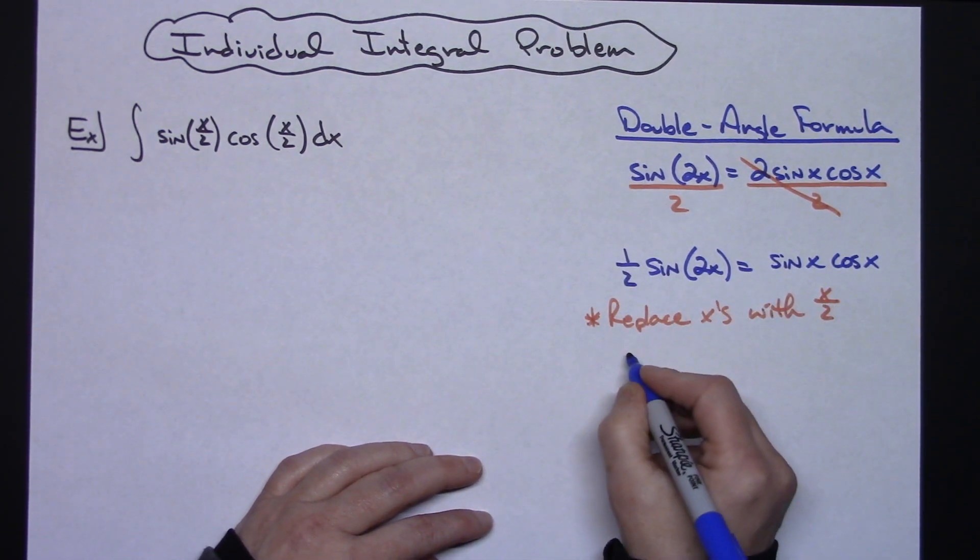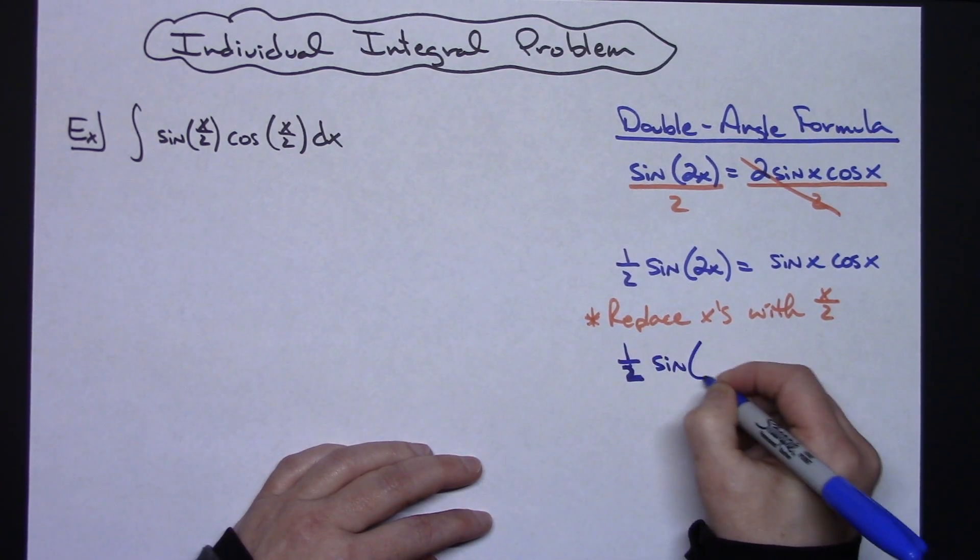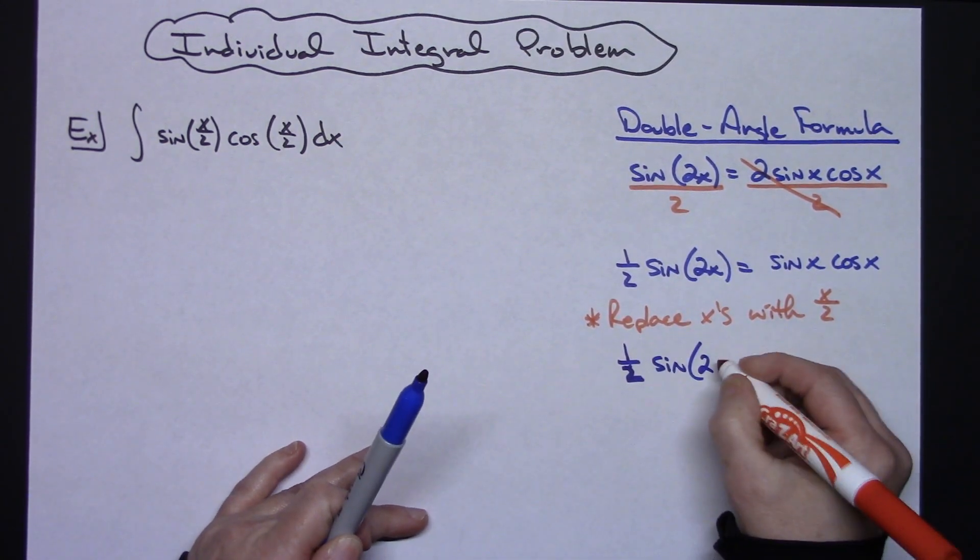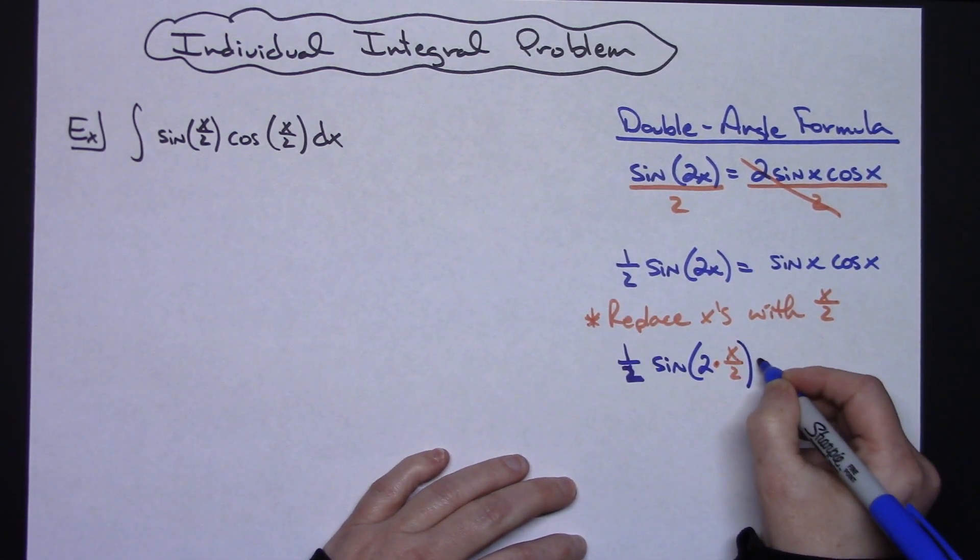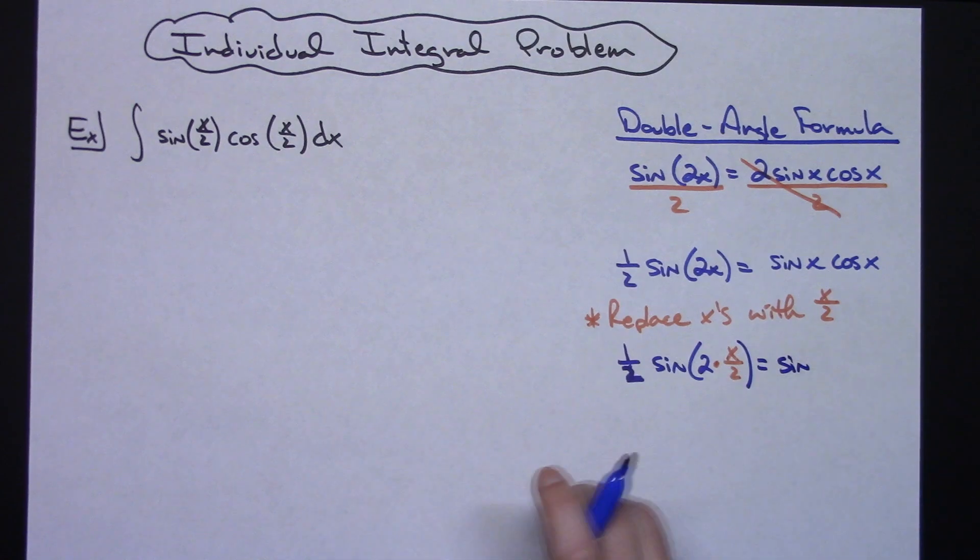Okay so in here I will have (1/2)sin, and then 2 times x/2, equals sin(x/2) times cos(x/2).